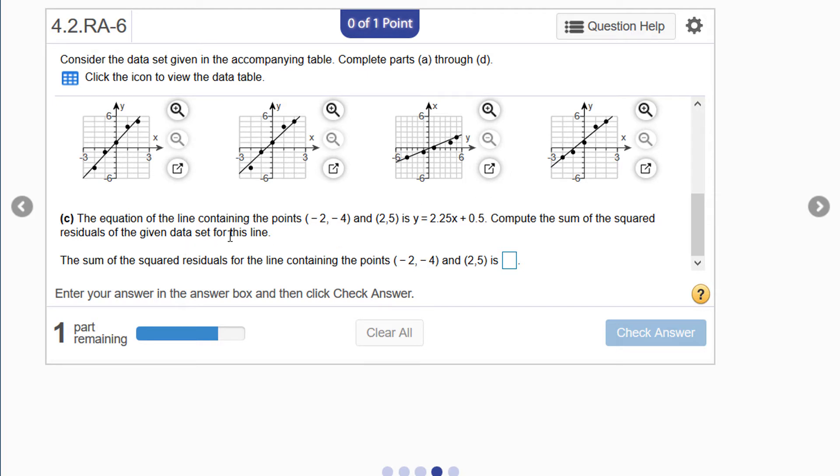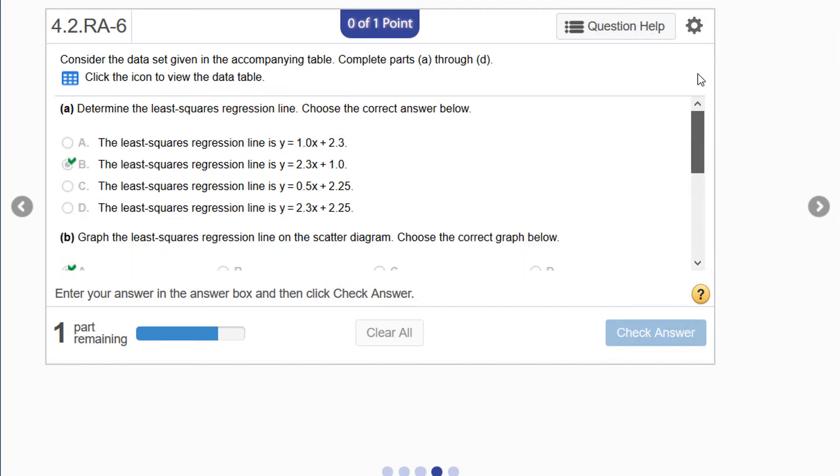In part C, they give us the equation for a line that goes through those two points, negative two, negative four and two, five. It's y equals 2.25x plus 0.5, and we want to find the sum of the squared residuals for that line. This is the more tedious part of this problem.